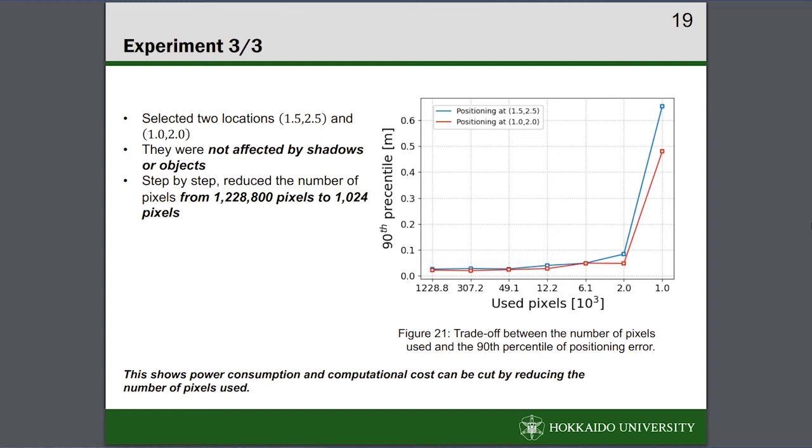Finally, we investigated the relationship between the number of pixels used and the positioning accuracy. The two locations, 1.5, 2.5 and 1.0, 2.0, which were unaffected by shadows or objects, were selected for the experiment, and gradually reduced the number of pixels used. Figure 21 shows that the positioning accuracy tends to decrease as the number of pixels used decreases. The important point here is that even positioning using 2000 pixels has achieved less than 10cm error.